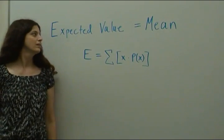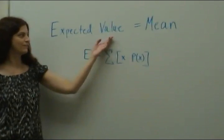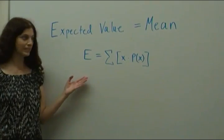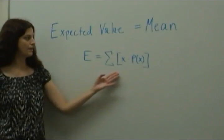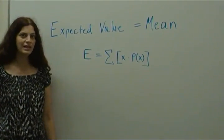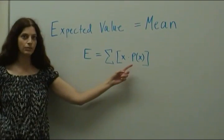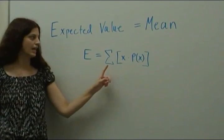In math we do the same thing. So the mean is equal to expected value, and this is the formula. E equals the sum of x times P of x. P of x is the probability. We take that times x and add them all up.